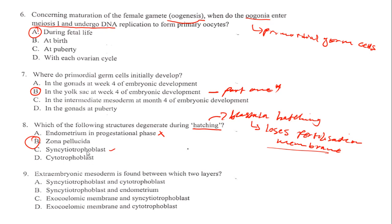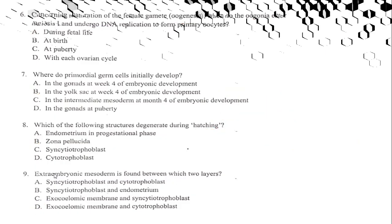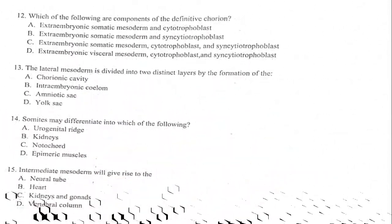The next question: extra-embryonic mesoderm is found between which two layers? Options include syncytial trophoblasts and cytotrophoblasts, syncytial trophoblasts and endometrium, exocoelomic membrane and syncytial blasts — all incorrect. The answer is simply C: exocoelomic membrane and cytotrophoblasts.